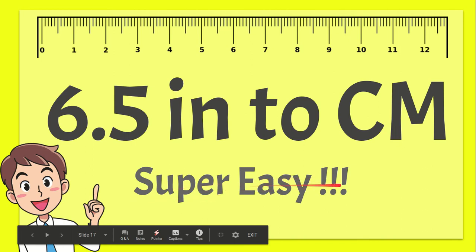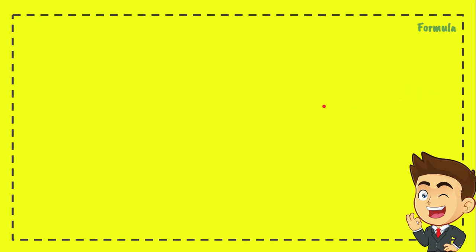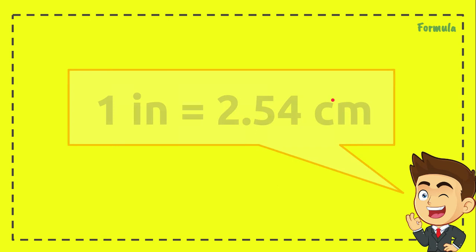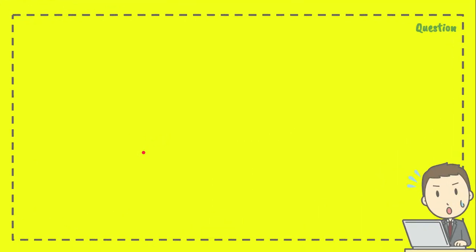Now before we convert the number, we need to know the formula first. This is the formula, or you can call it the conversion factor: one inch equals 2.54 centimeters. We're going to use it.